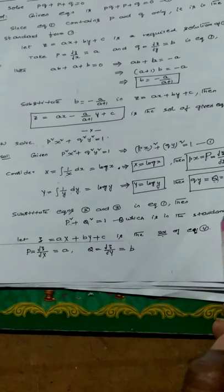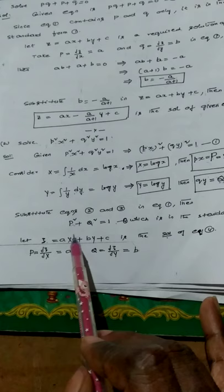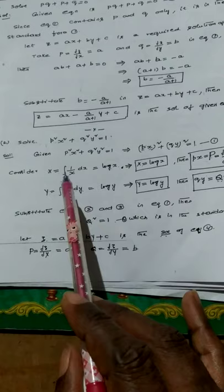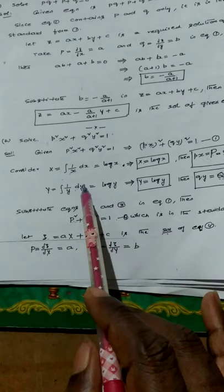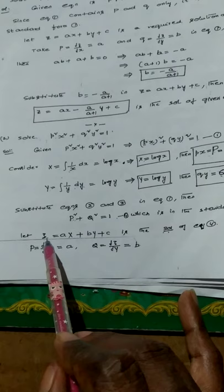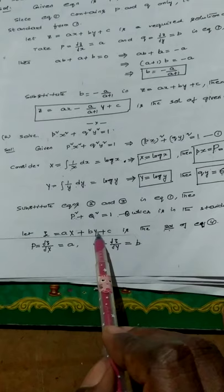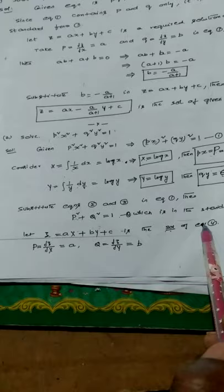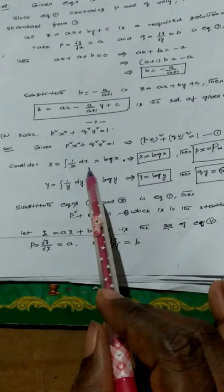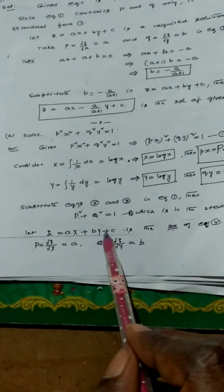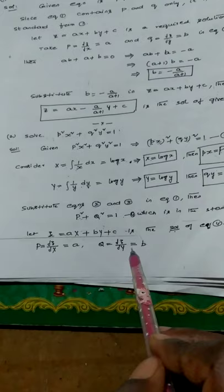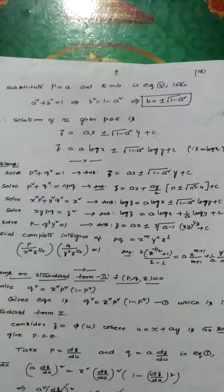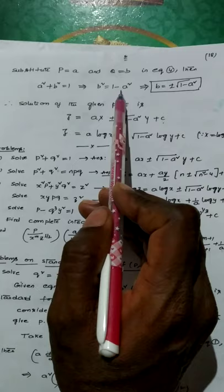If we substitute Px = capital P and Qy = capital Q in equation 1, we get P² + Q² = 1, which contains only P and Q and not x, y, or z. Hence it belongs to standard form 1. According to the working rule, z = ax + by + c is the solution. But we replace small x by capital X and small y by capital Y (z is not changed). So the complete solution is z = a·X + b·Y + c.